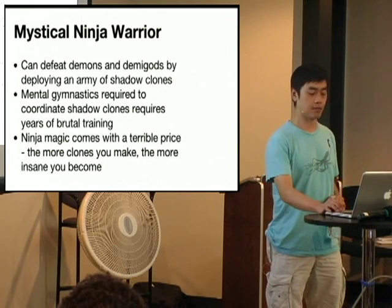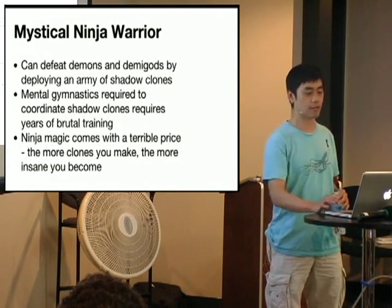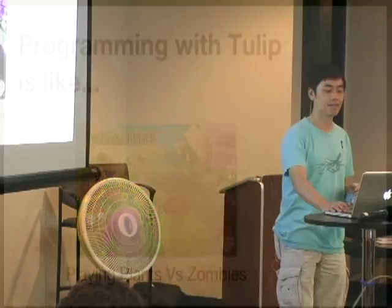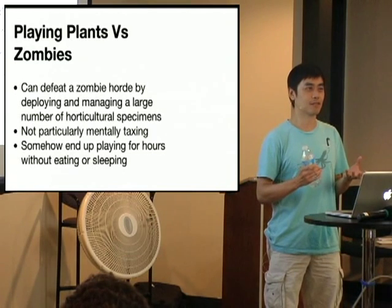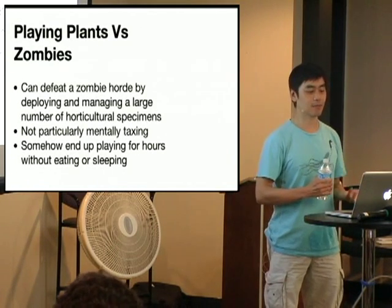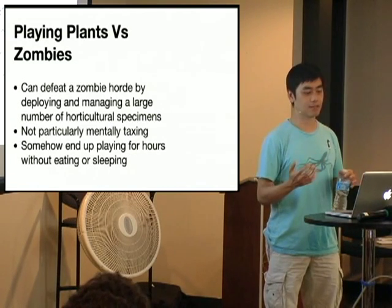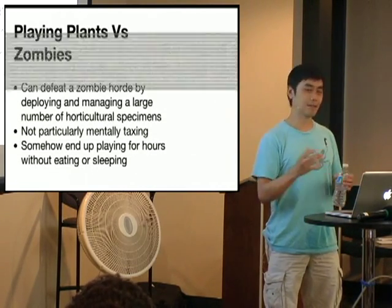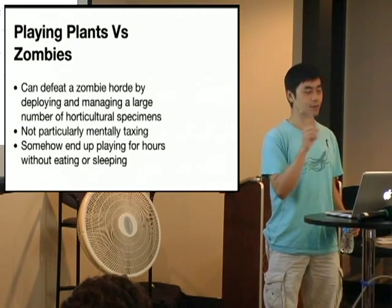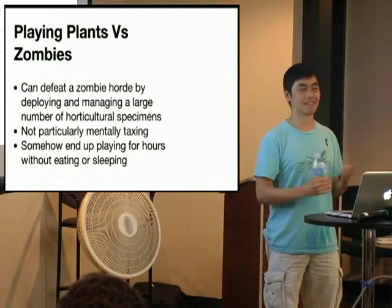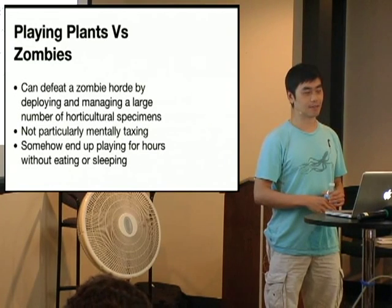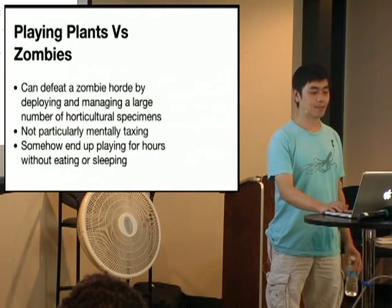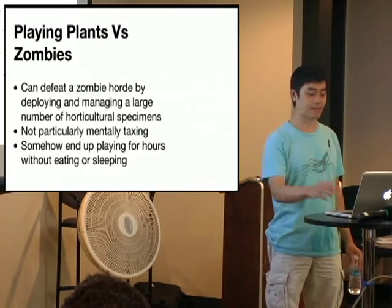On the other hand, if you're programming asynchronous code with Tulip, it's more like playing Plants versus Zombies. You have to fight zombies that want to invade your home, and the only weapons you have are plants. The game basically involves dragging, dropping, and tapping on things very quickly. It doesn't require any training—you just pick it up. And sometimes you end up playing for hours and hours without eating or sleeping because it's just that easy. It's a casual game.